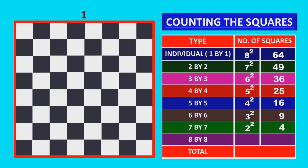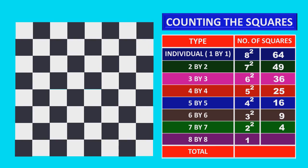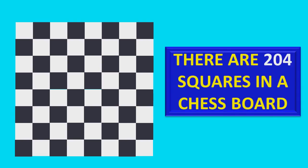The whole chessboard is an 8 by 8 square, so the count is 1. The total number of squares is equal to 204. So, there are 204 squares in a chessboard.